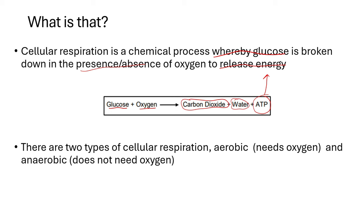There are two main types of cellular respiration. We have aerobic respiration — the one that needs oxygen — and we have anaerobic respiration — the one that does not need oxygen. During aerobic respiration we do need oxygen, but during anaerobic respiration we do not need oxygen.